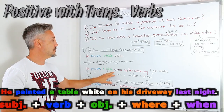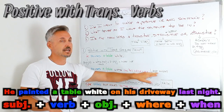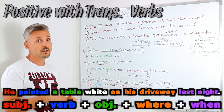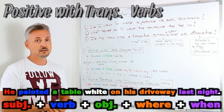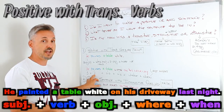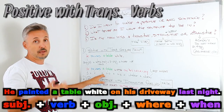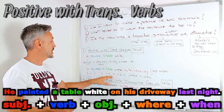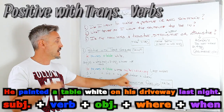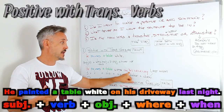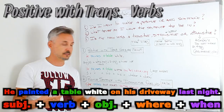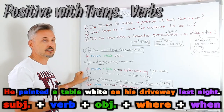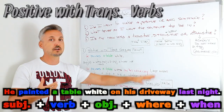He painted a table white on his driveway last night. We have the subject — personal pronoun he. Painted is the past of the verb to paint, a regular past, so we add -ed. Then the direct object: a table. Then more info: white. Then where: on his driveway. And then when: last night. Note that 'when' can go at the beginning of a sentence too — Last night, he painted a table white on his driveway.